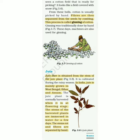Jute is cultivated during the rainy season. In India, jute is mainly grown in West Bengal, Bihar, and Assam. A jute plant is normally harvested when it is at the flowering stage. The stems of the harvested plants are immersed in water for a few days, and then the fibers are separated from the stems by hand.